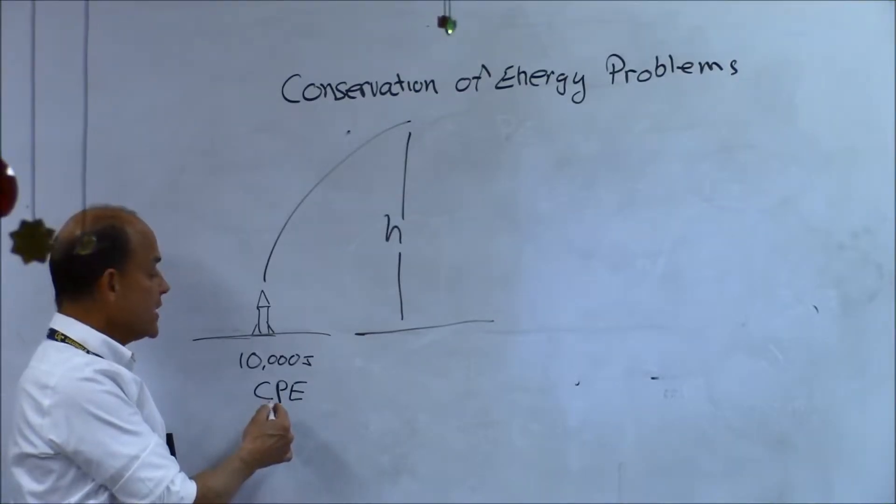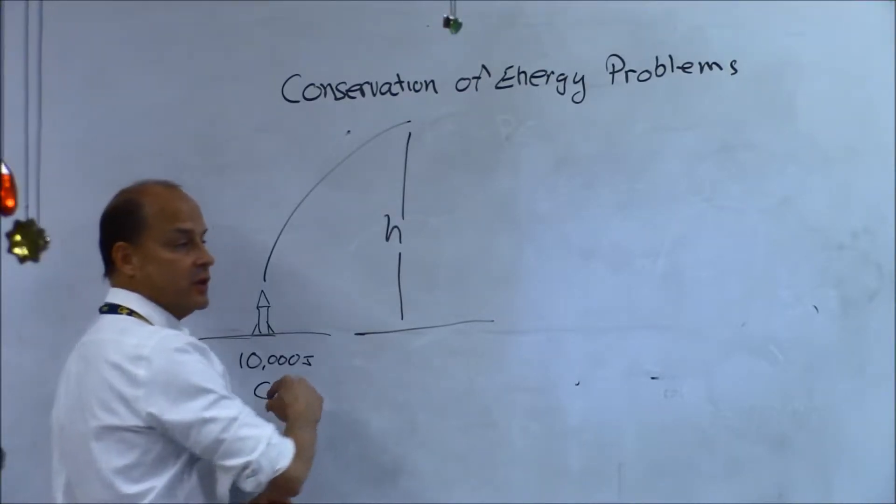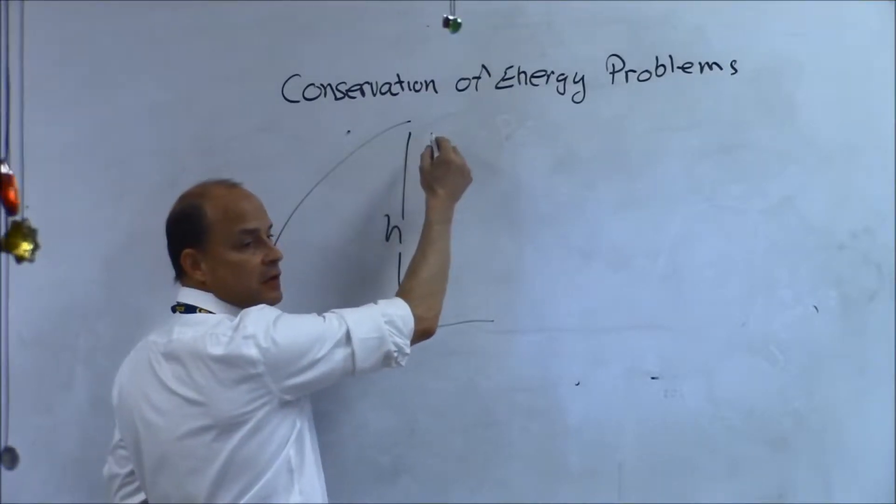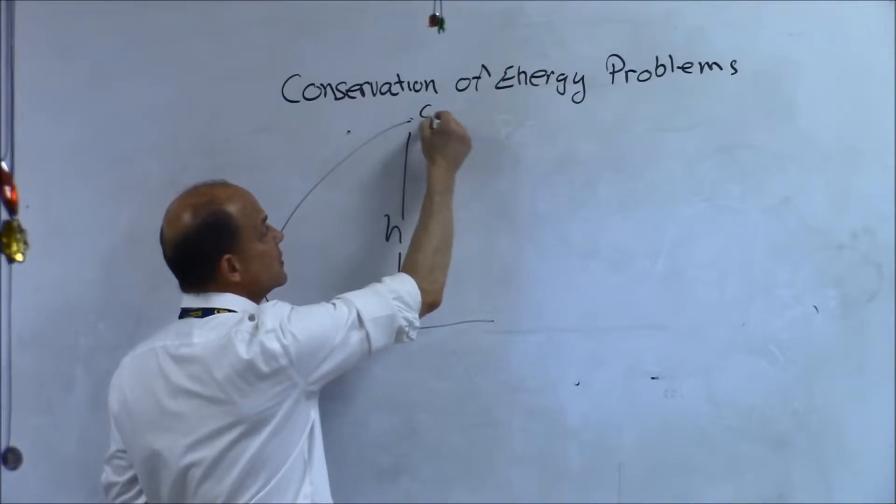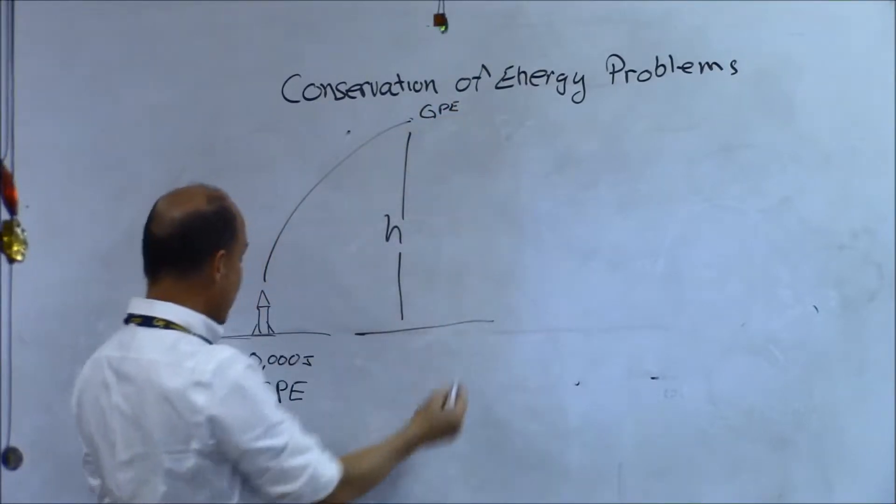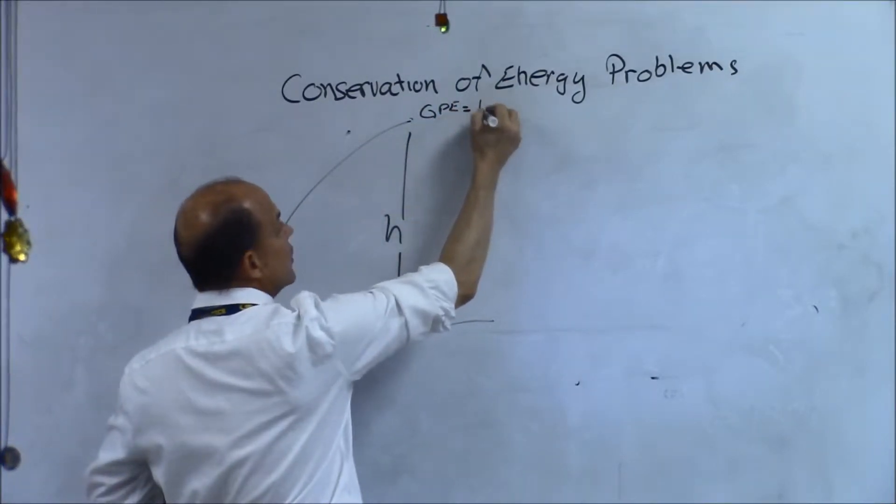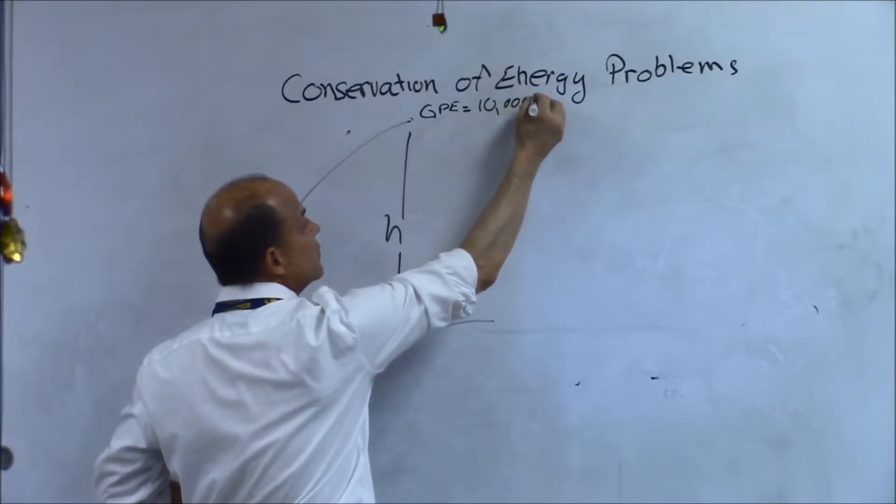If I start out with 10,000 joules of chemical potential energy and I launch that rocket, and I get up here, all that chemical potential energy becomes gravitational potential energy, right? So then I know that my gravitational potential energy is going to equal 10,000 joules if energy is conserved.